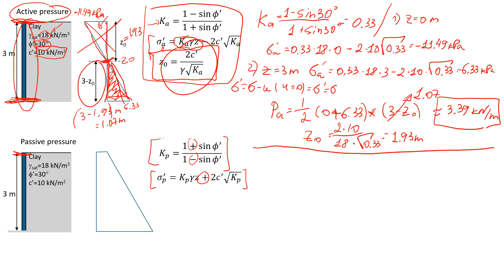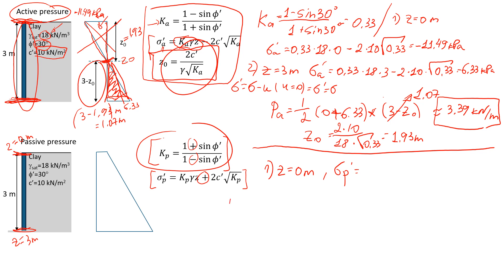Using the same procedure, we'll find the effective passive stress at z=0 and at z=3 meters. But first, let's find the coefficient of passive pressure, which I forgot to do earlier. The coefficient of passive pressure Kp equals 1 plus sine of 30 degrees divided by 1 minus sine of 30 degrees, and that gives us a value of 3.